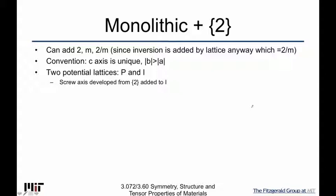Recall the monoclinic case — a lattice that has a general angle at the base but has sides that are perpendicular to the base. We have right angles on the sides, but this base angle is general and the lengths can be any lengths. There doesn't have to be any extra symmetry in any of the lengths.